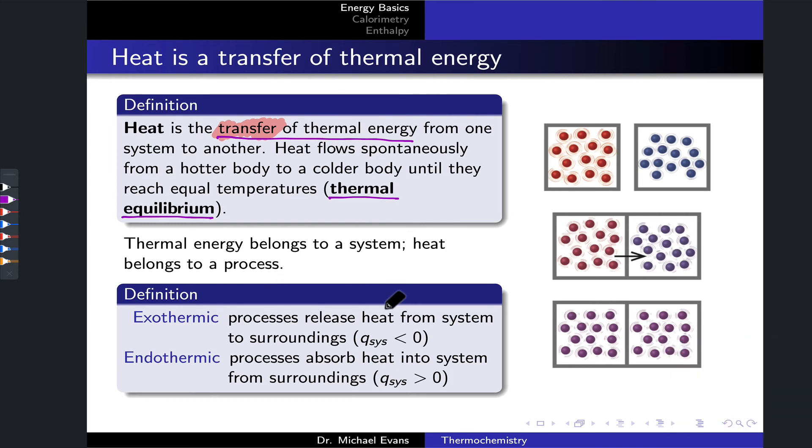To further understand heat, we can recognize the difference between heat and thermal energy as a difference between the state of a system and a process. Thermal energy is a state function. It really belongs to the state of a system. If we've got a system in a particular state, the positions and velocities of all of its particles are well-defined, and we can calculate the thermal energy of that system. On the other hand, heat is associated with a process, the transfer of thermal energy from one system to another. So heat is what we'll call a path or process function. It depends on the character of a process going from some initial state to some final state.